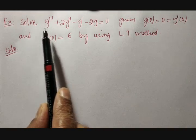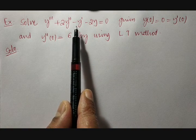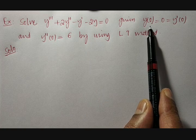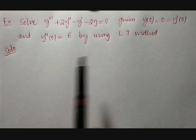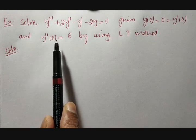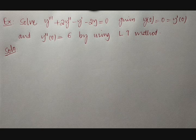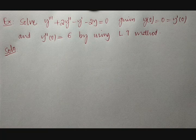Solve y triple dash plus 2y double dash minus y dash minus 2y equal to 0, where y(0) is equal to 0, y dash(0) is also equal to 0, and y double dash(0) is equal to 6, by using the Laplace transform method. The given equation is of third order, so we need to go up till third order in this case.